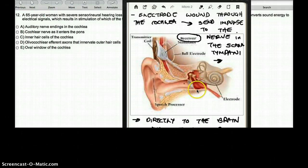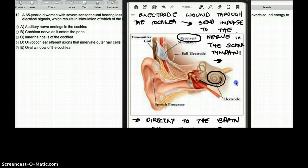The receiver is going to receive information and bring the information into the cochlea, and the receiver is going to wound around the cochlea like that. The receiver is going to send impulse through the scala tympani, and directly, this information is then taken to the brain.